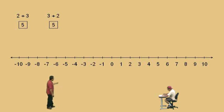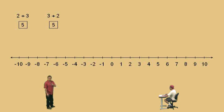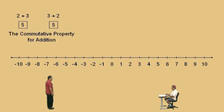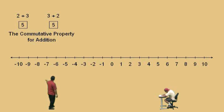All right. Now, that is showing us that if you're adding two numbers together and you switch the order, you get the same result. And that is what's called the commutative property for addition. The commutative property for addition says that A plus B is the same as B plus A.